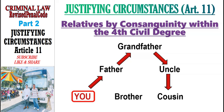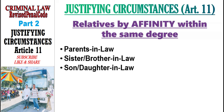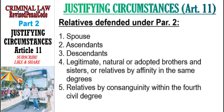How about relatives by affinity within the same degree? Affinity refers to relationship by marriage. So this includes your parents-in-law (the parents of your spouse), your brother-in-law or sister-in-law (the brother or sister of your spouse), and your son-in-law or daughter-in-law (the spouse of your child). These are the relatives covered under Paragraph 2, Article 11.